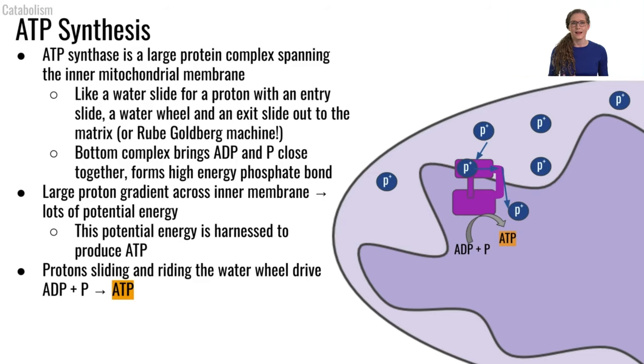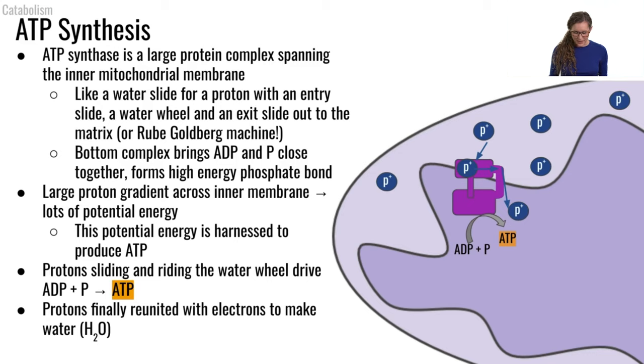Okay, so now finally, once those protons have gone through ATP synthase and they have ended up inside the mitochondrial matrix, now they can go and rejoin with the electrons and make water at the very end of the electron transport chain. So then everybody is happy at the end.